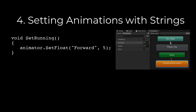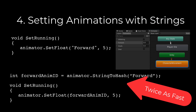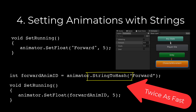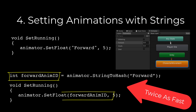Whenever you want to trigger an animation or set the value of a parameter, it's logical to use the string that represents that value — for example, 'forward' — inside your script because it makes it more readable. But using a string is actually half as efficient as using an integer. Instead, use StringToHash in Start or Awake, assign it to an int, and then use that int when setting your Animator parameter.